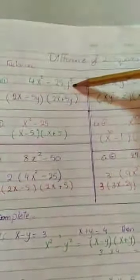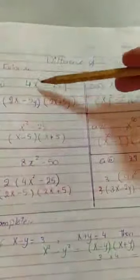So, our today's lesson is Difference of Two Squares. Factorize the expression 4x squared minus 25y squared. This expression got only two terms. How am I going to factorize this?